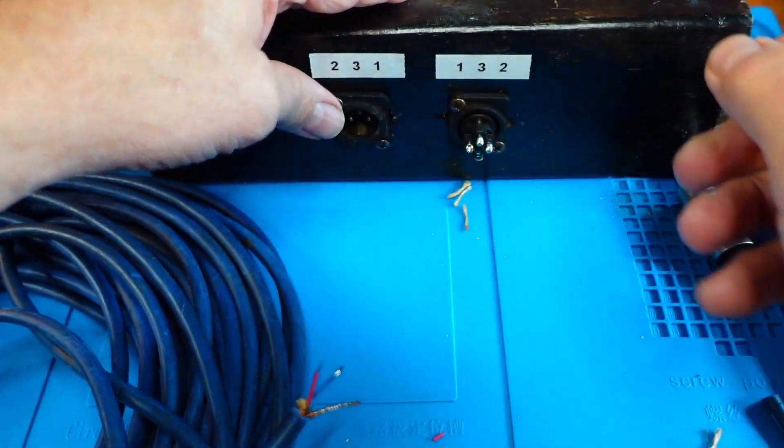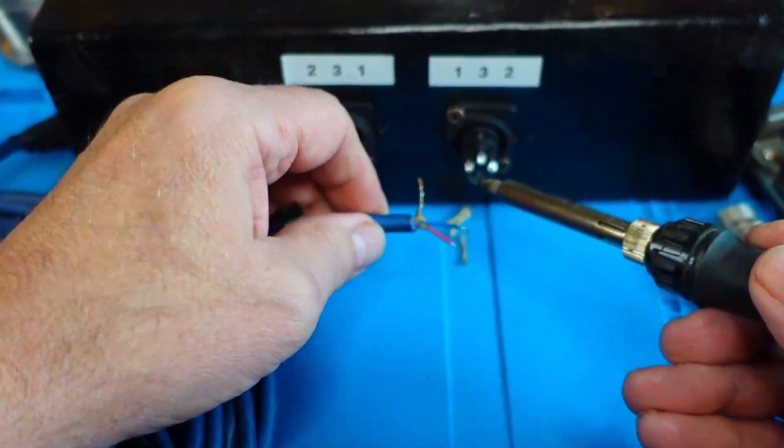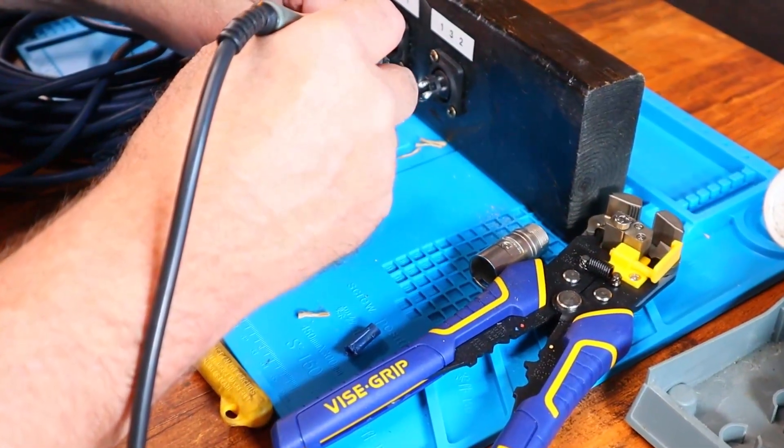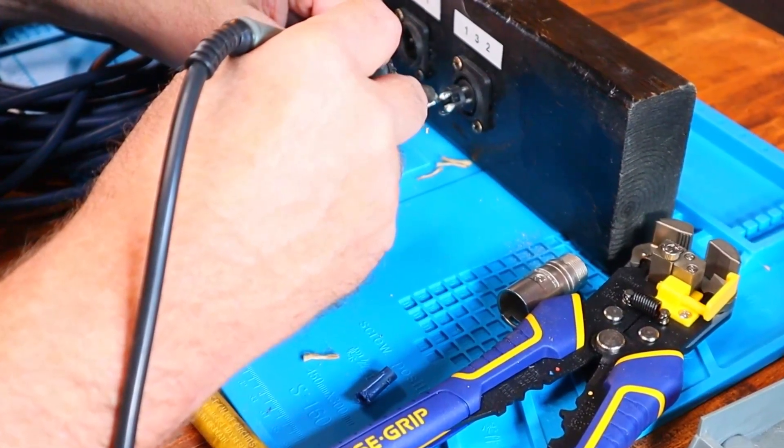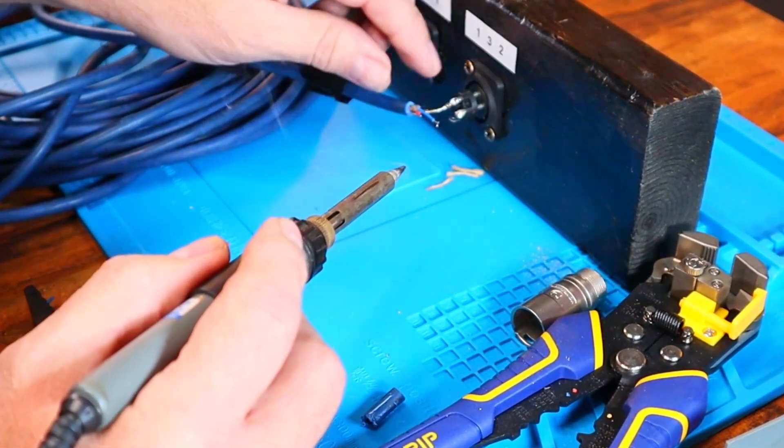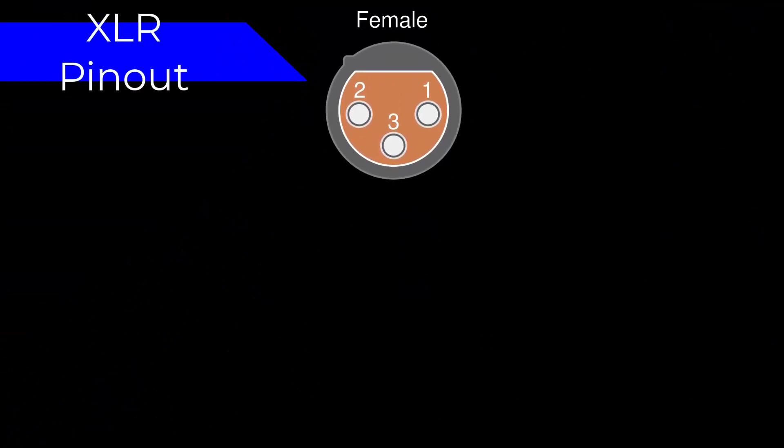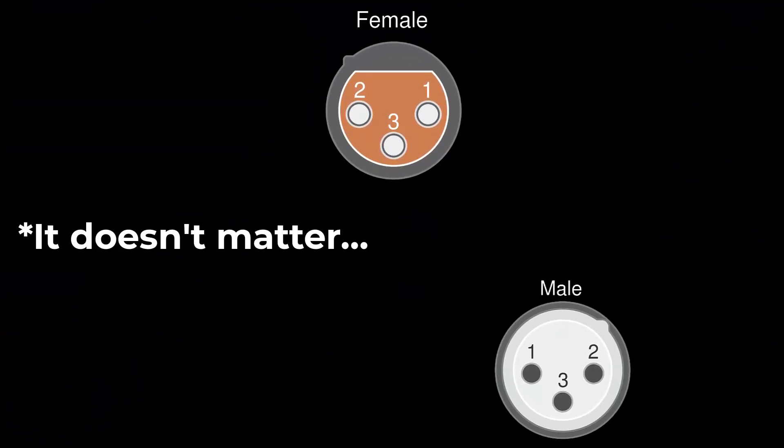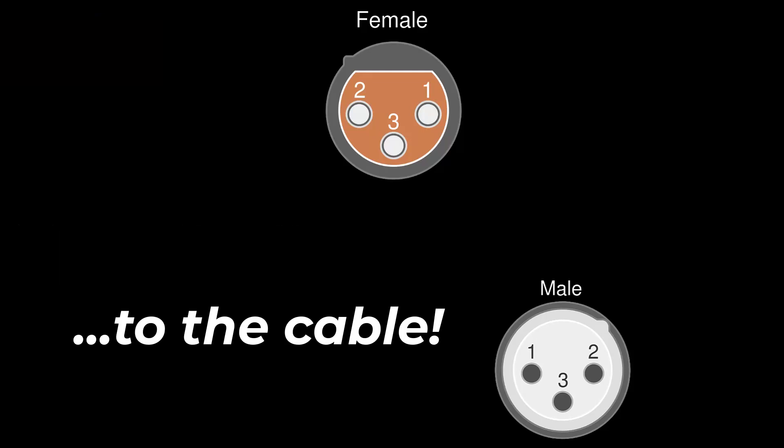As I said, pin one is always the shield, so we connect the shield to pin one. In a balanced circuit, pin two is normally the positive connection, but at this point it doesn't really matter. The cable only cares that you use the same conductor wire on the same pin on each end of the cable. We know the shield is pin one.